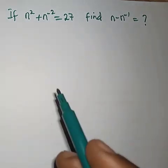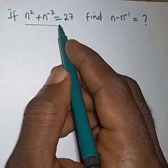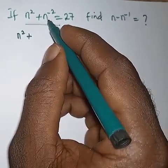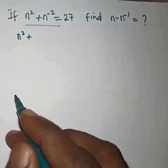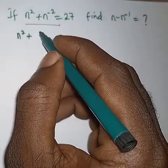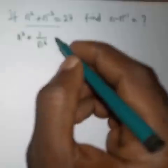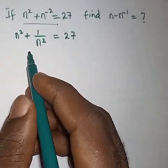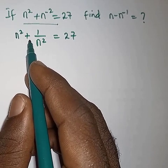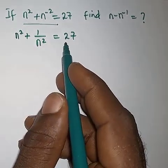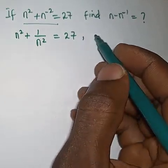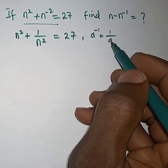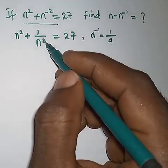So what we are going to do here is, you know that this can be expressed as n squared plus, from the law of indices, this n to the power minus 2 can be written as 1 over n to the power 2, which equals 27. So now I have n squared plus 1 over n squared equals 27, from the law that says a to the power minus 1 equals 1 over a — that is the law of indices. That is what we applied here.